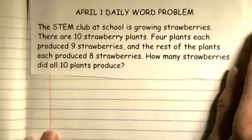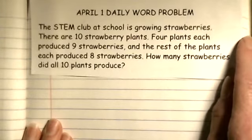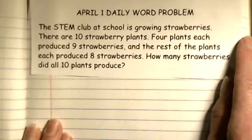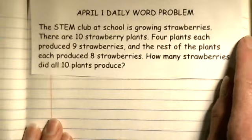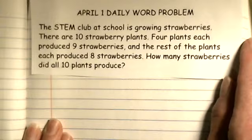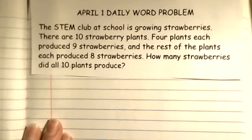All right, let's get serious now. The STEM club at school is growing strawberries. There are ten strawberry plants. Four plants each produce nine strawberries, and the rest of the plants each produced eight strawberries. How many strawberries did all ten plants produce?